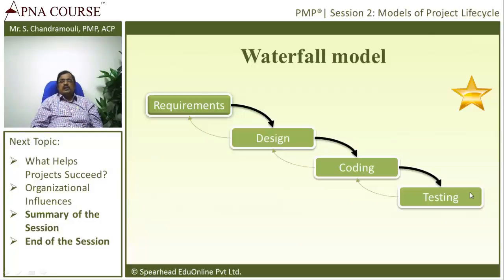The Waterfall Model is simple — everybody knows about it. There are a lot of advantages: it is very simple to follow. However, it is also very difficult in certain situations. For example, if in the design phase the customer is asking for a change in requirements, you cannot go back. You need to completely finish the current phase before starting the next one, so you need to be very careful.